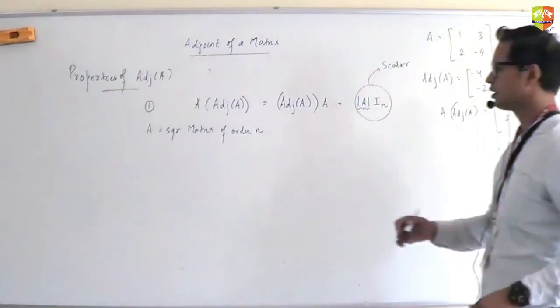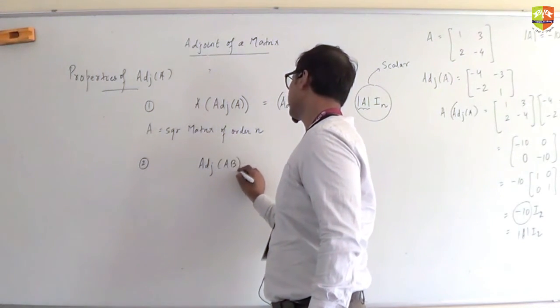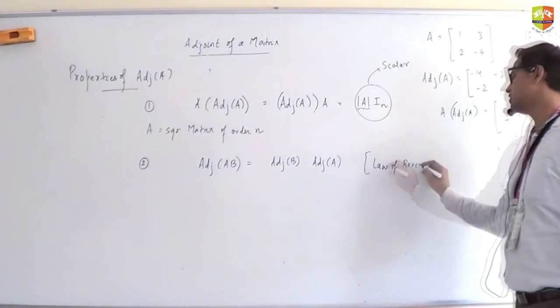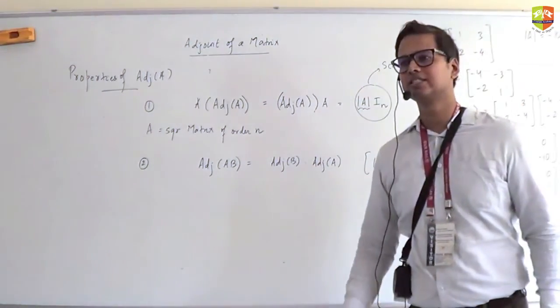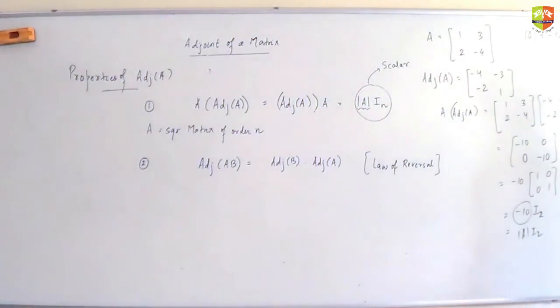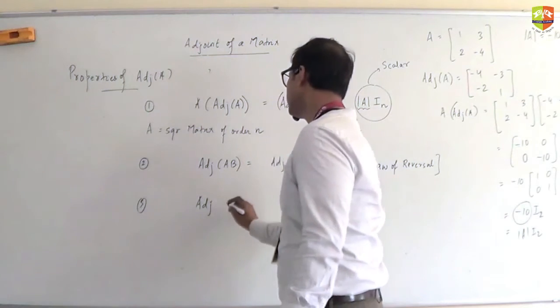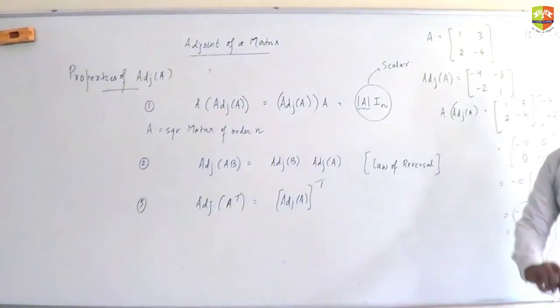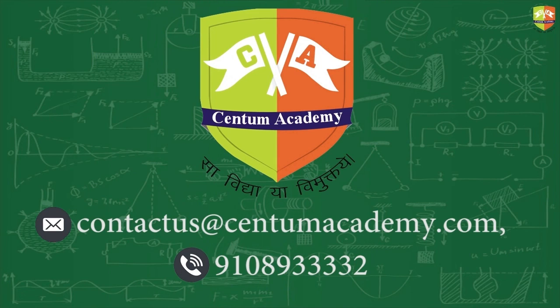Next property: adjoint of AB follows the law of reversal. Adjoint of AB equals adjoint of B into adjoint of A. Law of reversal - where else did we see this law? A transpose: AB transpose is B transpose A transpose. And you will also see this law coming up in inverse. AB inverse is B inverse A inverse. Third property: adjoint of A transpose is as good as transposing the adjoint itself. Adjoint of A transpose equals transpose of adjoint of A.